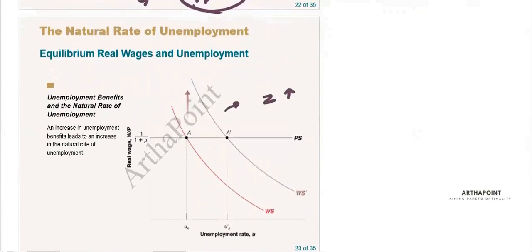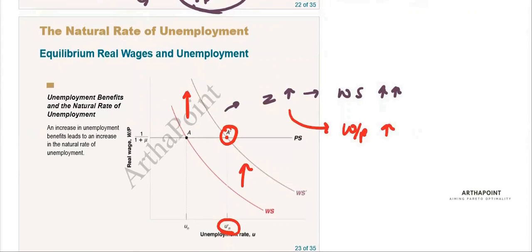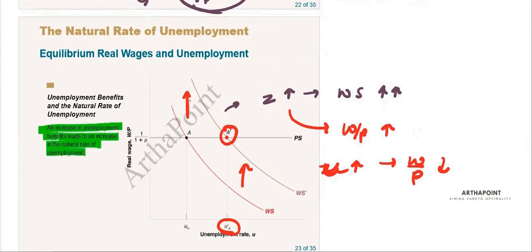When z increases, the wage-setting relation shifts upwards. When the wage-setting relation shifts upward, the new equilibrium is at the new intersection at point A-dash, so the unemployment rate increases. An increase in z causes an increase in real wage; correspondingly, the unemployment rate increases, causing the real wage to decrease, so the equilibrium is maintained. An increase in unemployment benefit leads to an increase in the natural rate of unemployment.